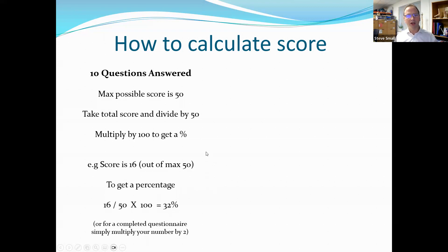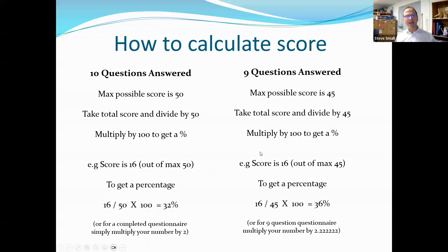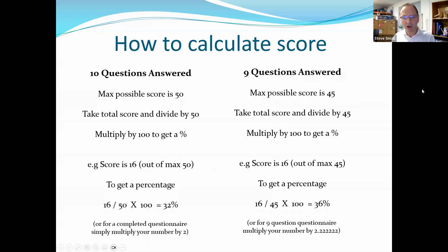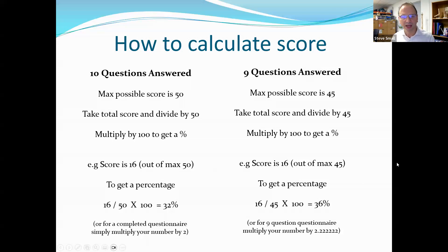If the sex life question is not answered, you have nine questions and a maximum score of 45. It's not a simple case of multiplying by two in this instance. You take your total score, divide by 45, and multiply by 100 to get a percentage. So a score of 16 out of 45: 16 divided by 45 times 100 gives you 36%. Alternatively, you can multiply your score by 2.2222 to get the same result.